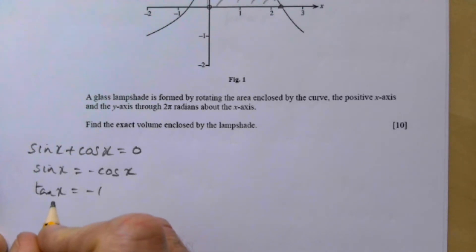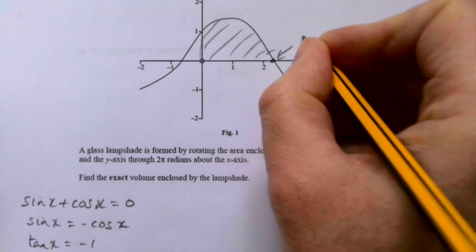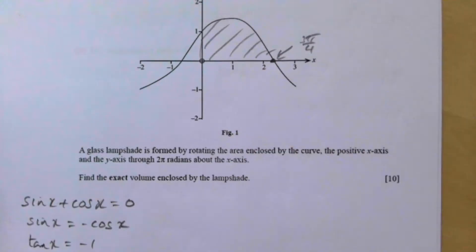If we want to know where tan x is minus one, you can do a couple different things, but just on your calculator it comes out to be three pi over four. So that point there is three pi over four, and that's going to be where we integrate between.